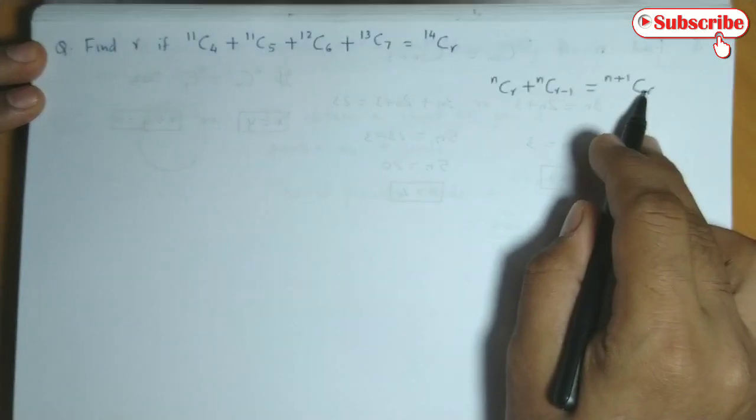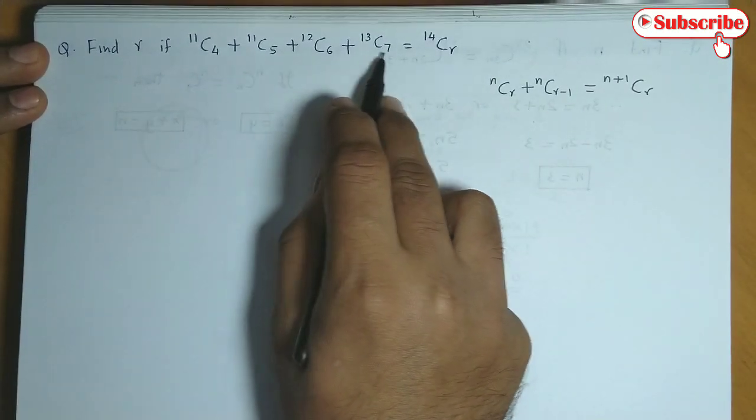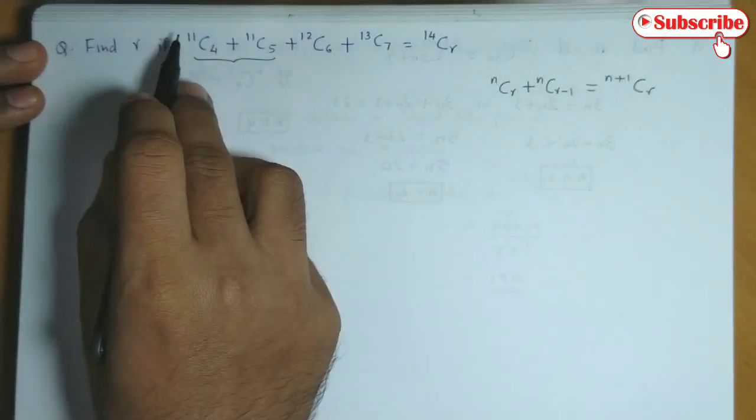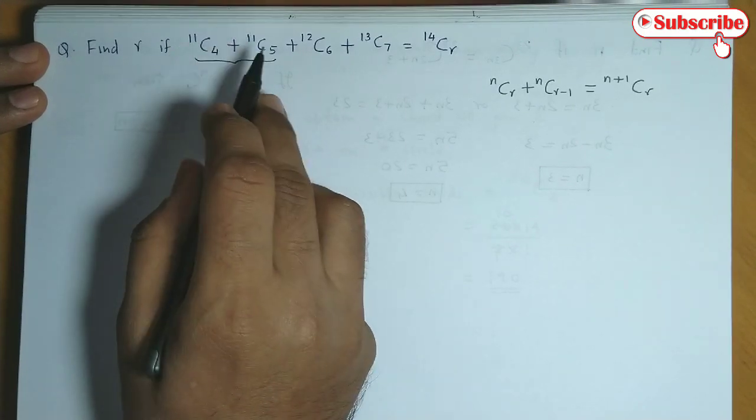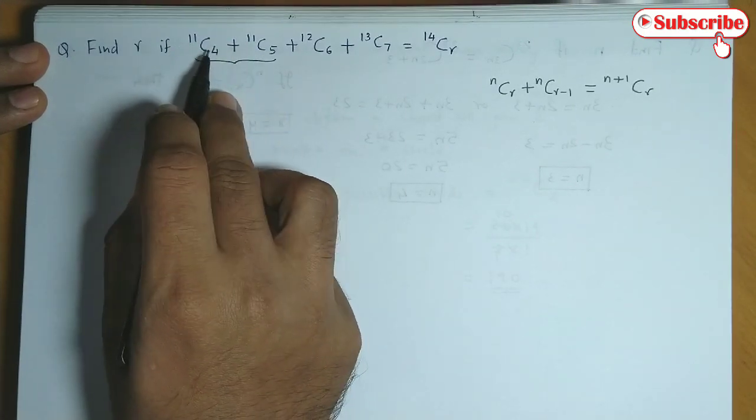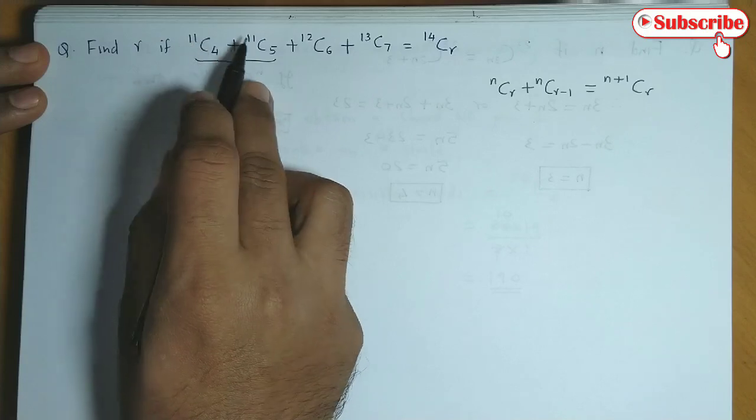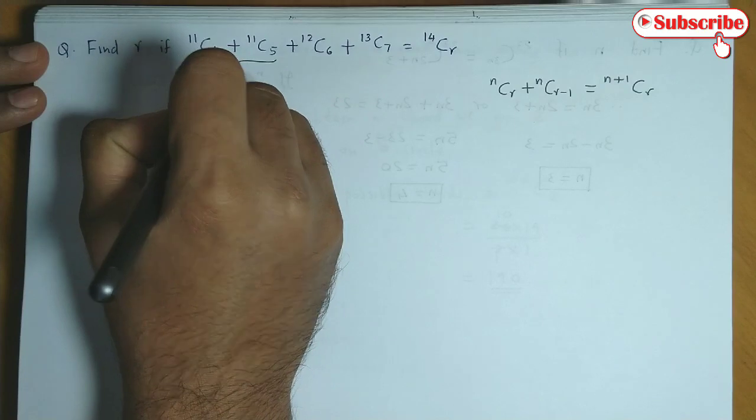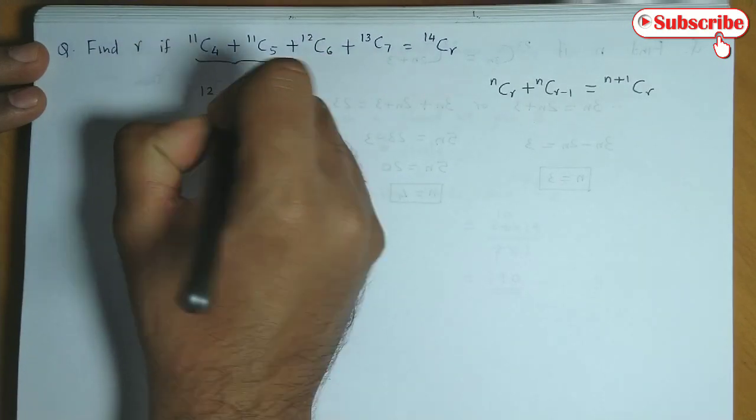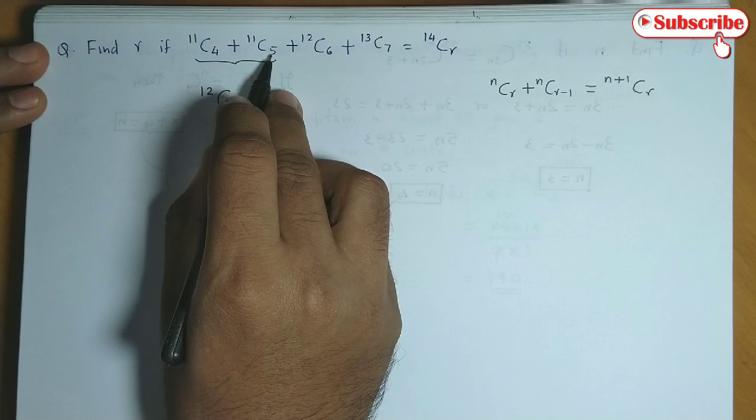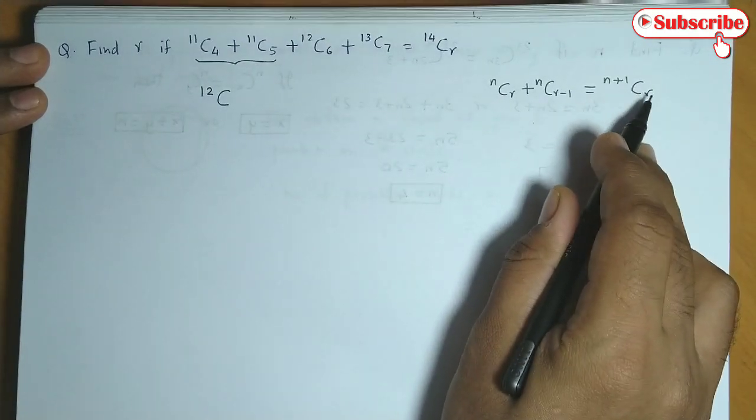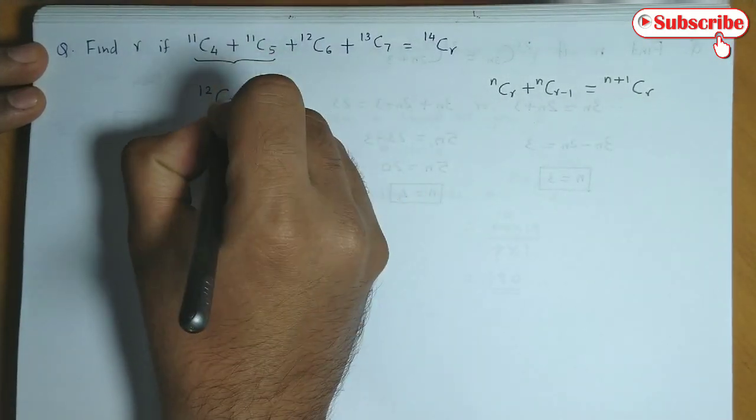So using this property on this chain of combinations, if you observe these two terms, N is the same. There's a difference of 1 between the R values. So N changes to N plus 1, that is 11 would become 12C. Now 5 can be denoted as R and 4 is R minus 1. So it is (N+1)CR. So we write 5 over here.